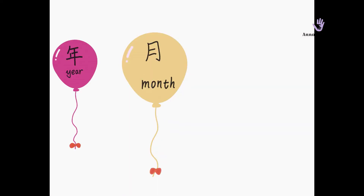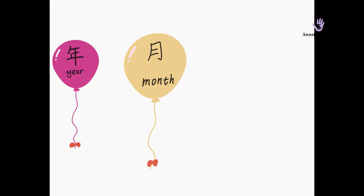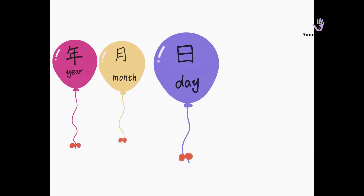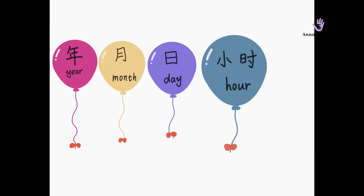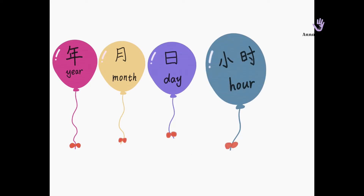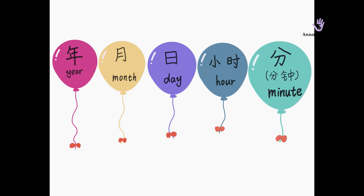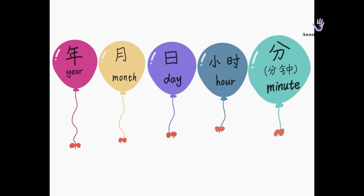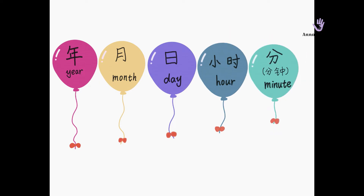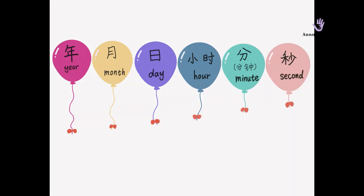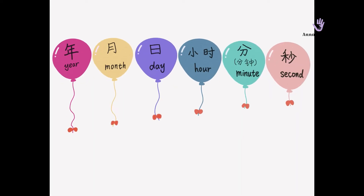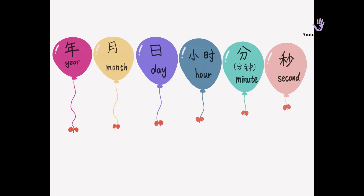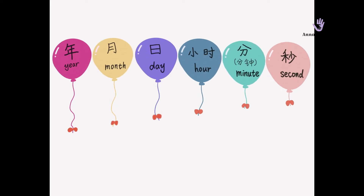Nian means year. Yue means month. Ri means day. Xiao shi means hour. Fen or fen zhong means minute. Miao means second.